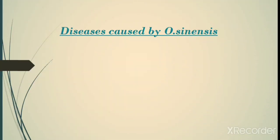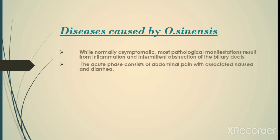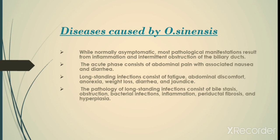The diseases caused by Opisthorchis sinensis: while normally asymptomatic, most pathological manifestations result from inflammation and intermittent obstruction of the bile ducts. The acute phase consists of abdominal pain with associated nausea and diarrhea. Long-standing infection consists of fatigue, abdominal discomfort, anorexia, weight loss, diarrhea, and jaundice. Pathology of long-standing infections consists of bile stasis, obstruction, bacterial infections, inflammation, hyperplasia, and development of cholangiocarcinoma.